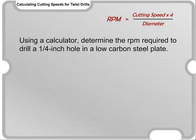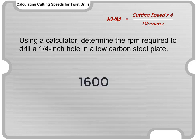Using a calculator, determine the RPM required to drill a one-quarter inch hole in a low-carbon steel plate. The final answer is 1600.